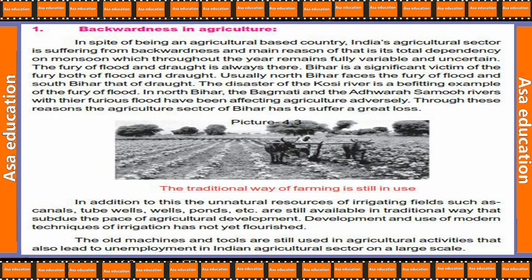Backwardness in Agriculture: In spite of being an agriculture-based country, India's agriculture sector suffers from backwardness. The main reason is total dependency on the monsoon, which throughout the year remains fully variable and uncertain.